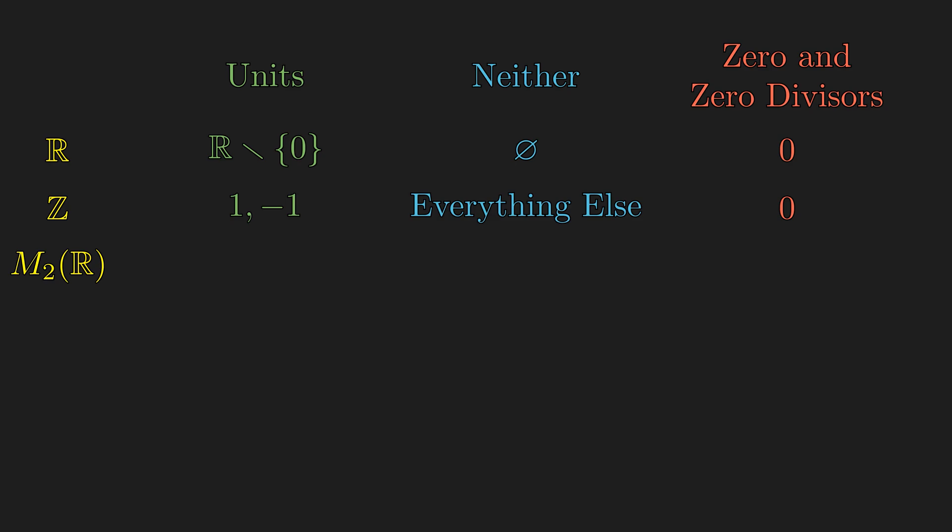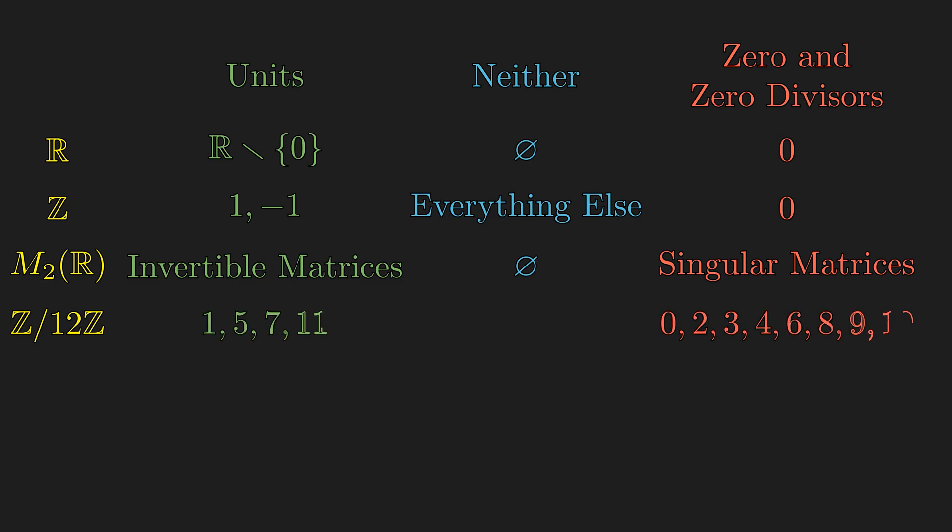Then, we have the matrix ring, which is very polarized with no middle class, like the late stage capitalism. Then how about the integers mod 12? Any number that shares a factor with 12 is a 0 divisor in this ring, and ones that do not share a factor with 12, or we say relatively prime to 12, are units in this ring.